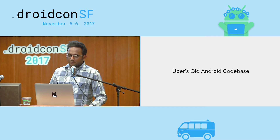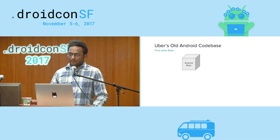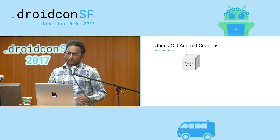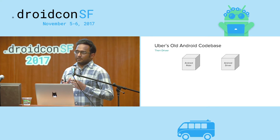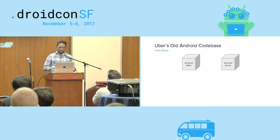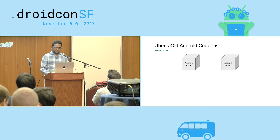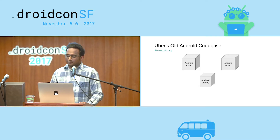When I started at Uber, I want to give you a glimpse of how the old Android code base was back in the day. We had this one rider app that a lot of people contributed to, and everything was good until we also wanted to write a driver app. When we wanted to write the driver app, a lot of things became apparent. We had a lot of shared code that we wanted to use from the rider app, which meant that we wanted to share code between multiple apps. So we thought it would be a good idea to extract some common bits out into a library.